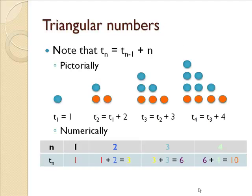In the triangular numbers, there's a relationship that the nth triangular number, T sub n, is the previous triangular number, T sub n minus 1, plus n, plus that index that you're looking at. So pictorially, if the first triangular number is 1, the second triangular number is 1 plus 2. The third triangular number is the second triangular number, these three dots, plus 3. And the fourth triangular number is the previous triangular number, these six dots, plus 4.